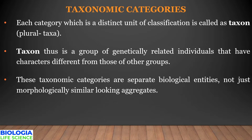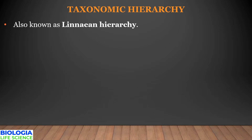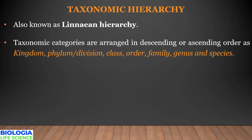The taxonomic categories are distinct biological entities — they are not just morphologically similar-looking bodies. They are arranged either in descending or ascending order, constituting the taxonomic hierarchy, also called the Linnaean hierarchy. The seven major categories are: kingdom, phylum or division, class, order, family, genus, and species.